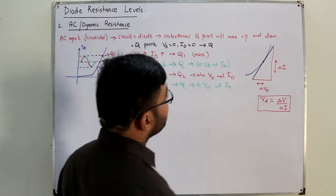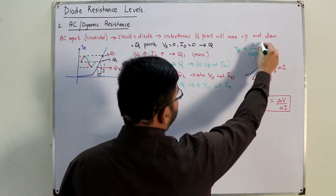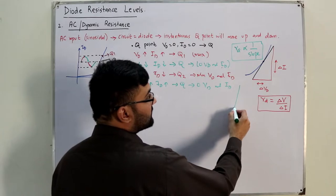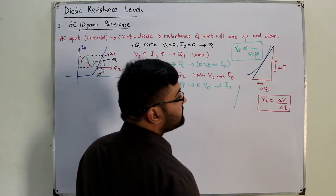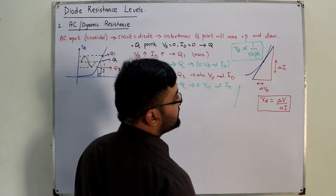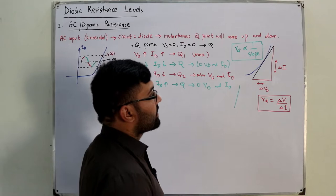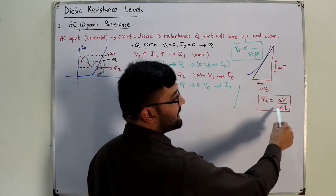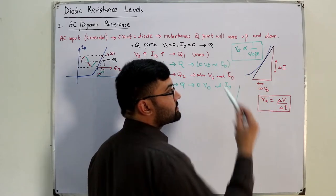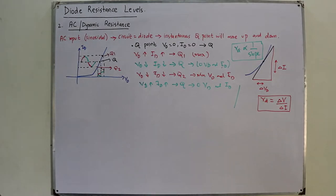From this you can see that Rd is inversely proportional to the slope of the tangent. If the tangent is steeper — more vertical — the change in voltage is less and the change in current is more, which means the resistance would be less. Increasing the slope decreases the resistance.